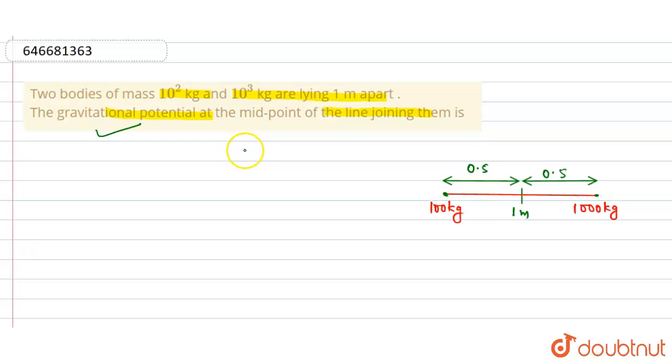We know that the formula of gravitational potential is given by U = -Gm/r. The value of r is given as 1 meter, and masses are given for two bodies: let this be m1 and this be m2.